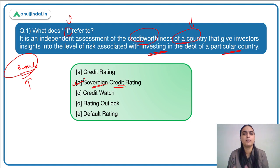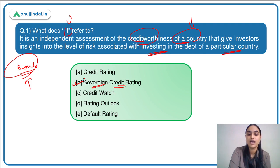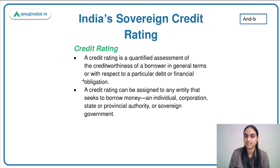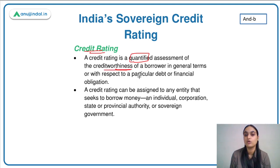Now let us discuss a bit about credit rating, sovereign credit rating, rating outlook, and why we are discussing it now — what is the recent news associated with this? Credit rating is basically a quantified assessment of the creditworthiness of a borrower in general terms or with respect to a particular debt or financial obligation. If you are investing in bonds of some company, that company is raising money through those bonds, and you have to check whether it has good creditworthiness.